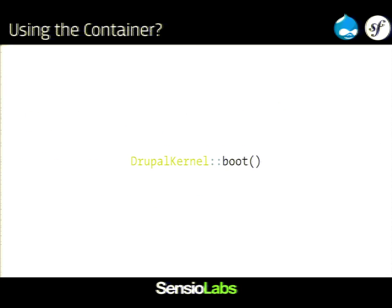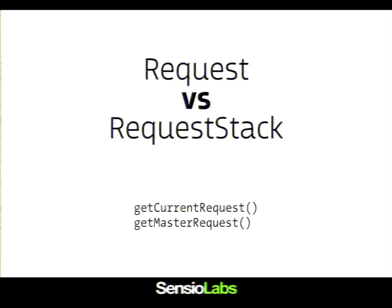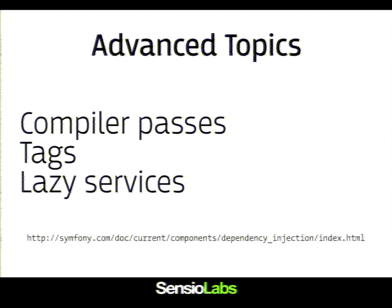At some point, someone needs to bootstrap the container. That's done by DrupalKernel::boot(), and that's where the container is actually created, dumped as a plain PHP file, and that's where we get the kernel and handle a request. If you want to learn more about how it works behind the scenes, you can have a look at the boot method of DrupalKernel. Some advanced topics I've not talked about: compiler passes, tags, lazy services. Those are really advanced topics you don't need to dig into now if you're not familiar with dependency injection and the container. We have plenty of documentation, so there's a link where you can get more information.